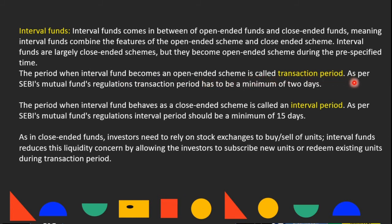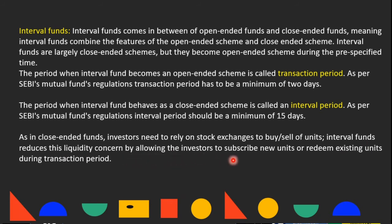During the transaction period, investors can do transactions directly with AMC. As per SEBI's mutual fund regulation, the transaction period must be a minimum of 2 days. The period when the interval fund behaves as a close-ended scheme is called the interval period, and as per SEBI's regulation, the interval period should be a minimum of 15 days. As in close-ended funds, investors rely on stock exchanges to buy or sell units, but interval funds reduce this liquidity concern by allowing investors to subscribe new units or redeem existing units during the transaction period.